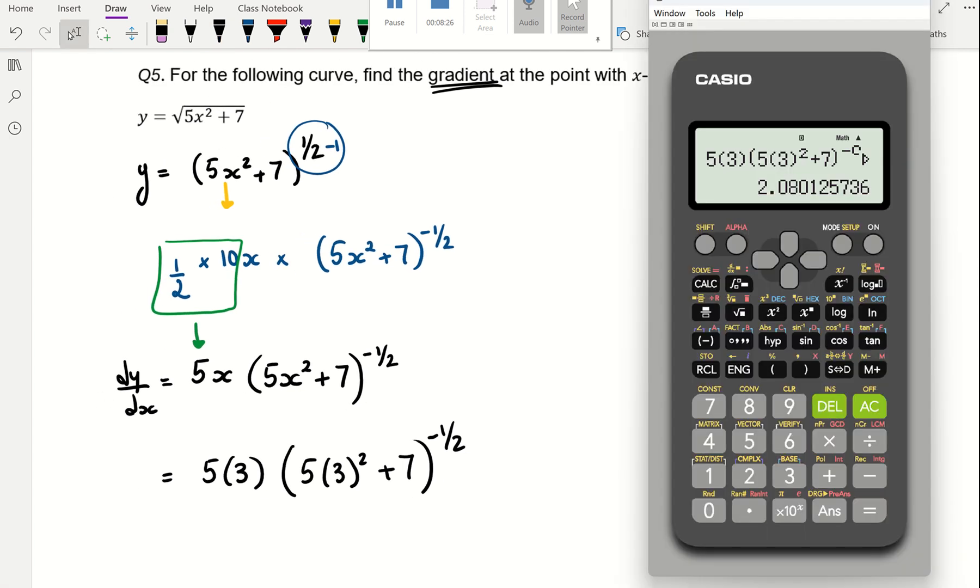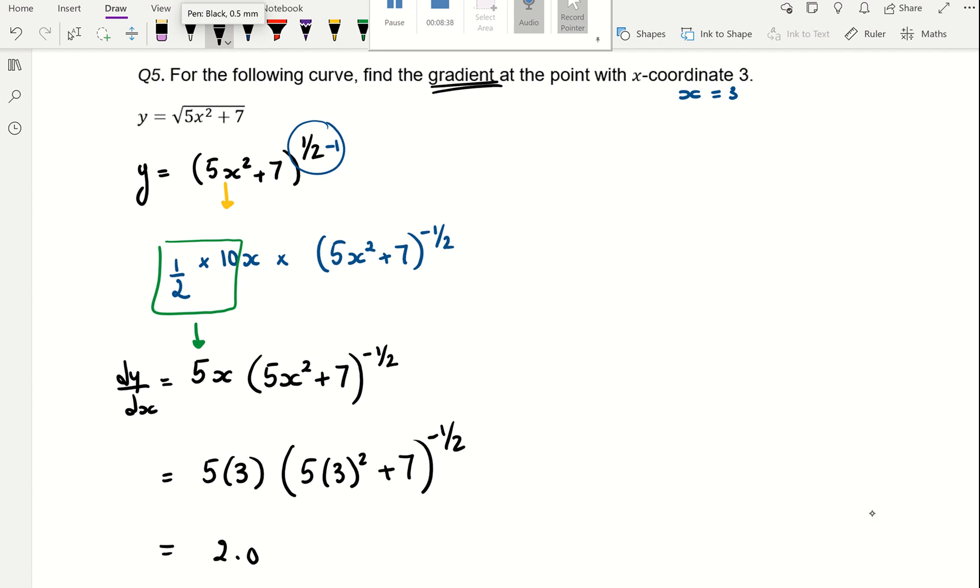It doesn't really ask for a particular rounding, so you can write all the digits on your calculator, or you can round it, let's say to two decimal places. So 2.08 to two decimal places.